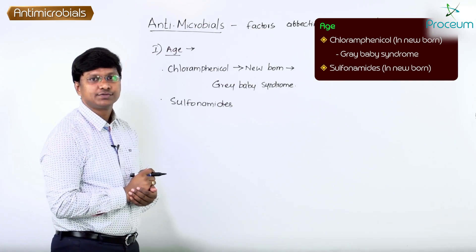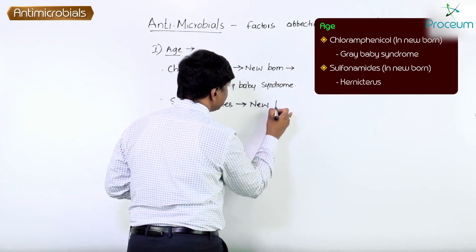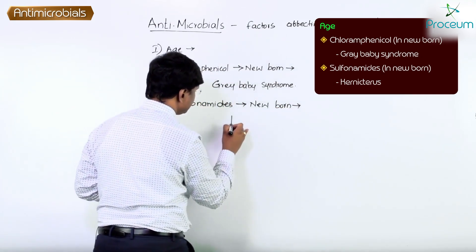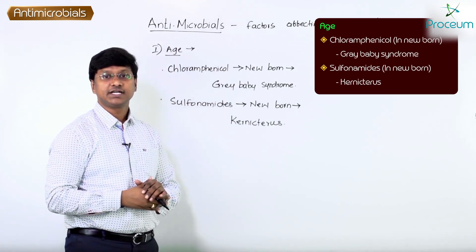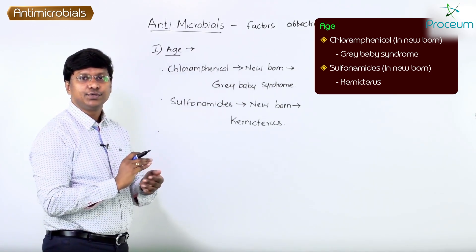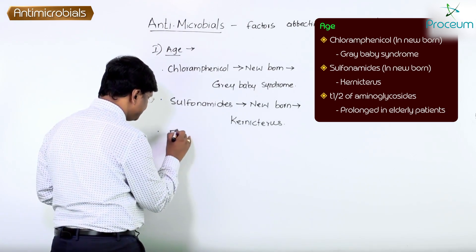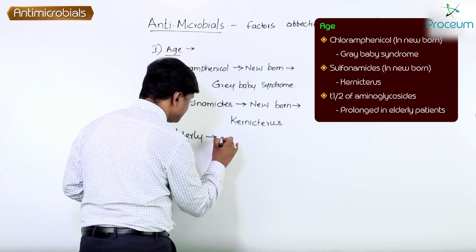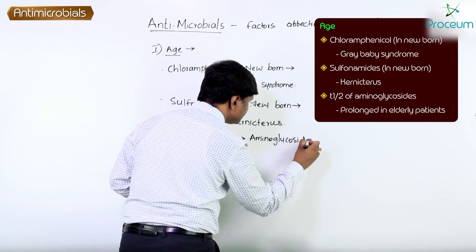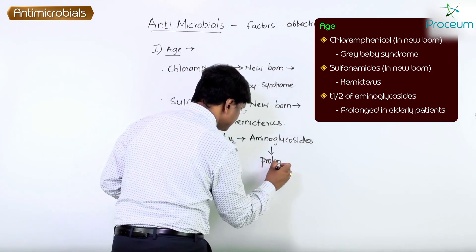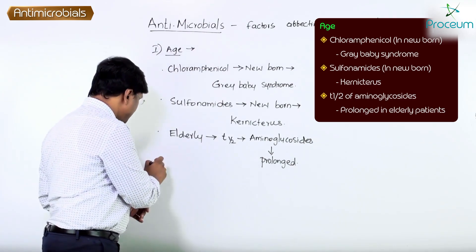Next, sulfonamides — if you give sulfonamides to a newborn, they will cause kernicterus. Also, the half-life of aminoglycosides is prolonged in elderly individuals.